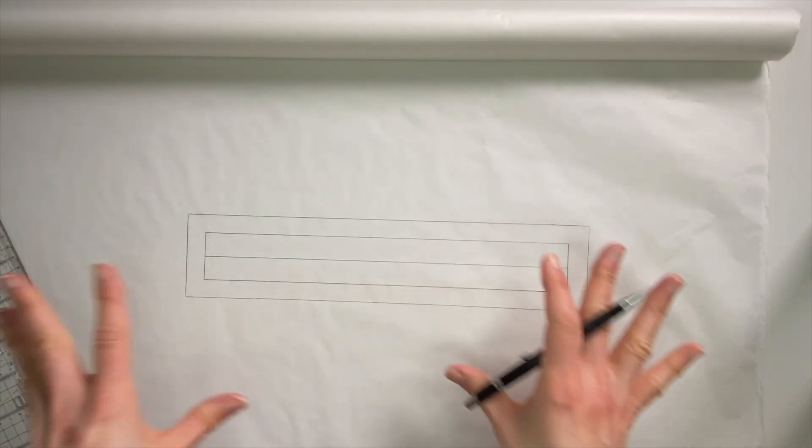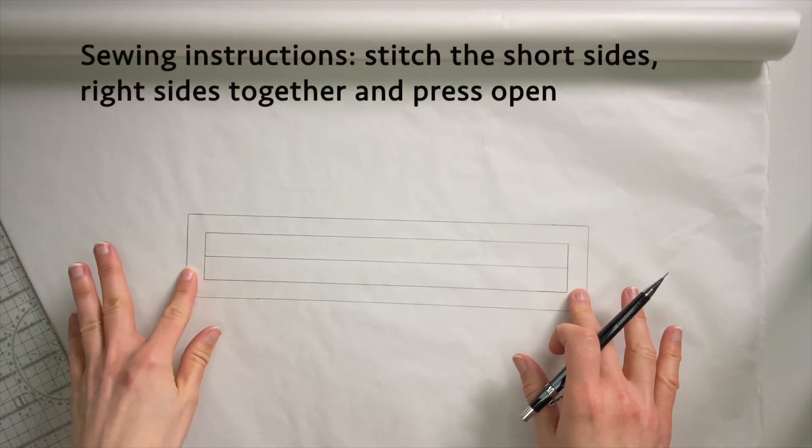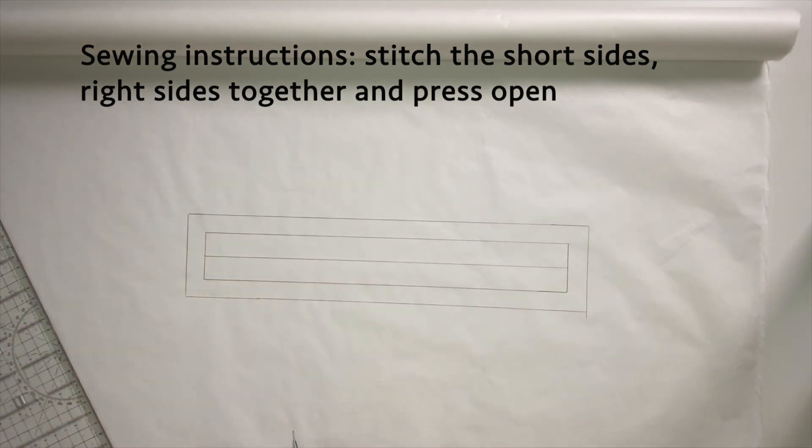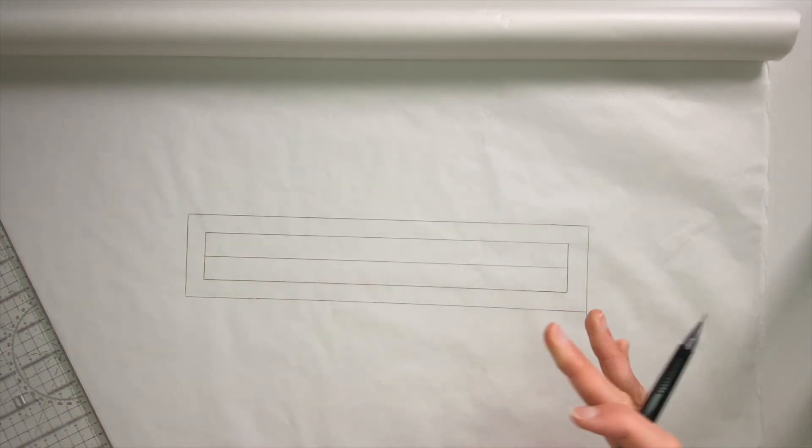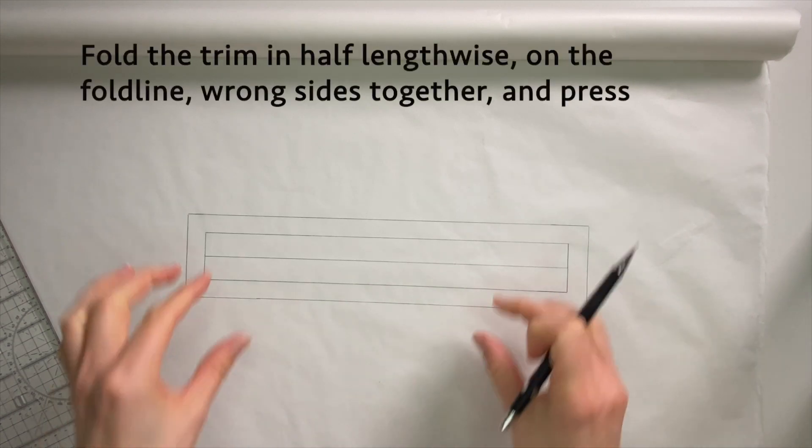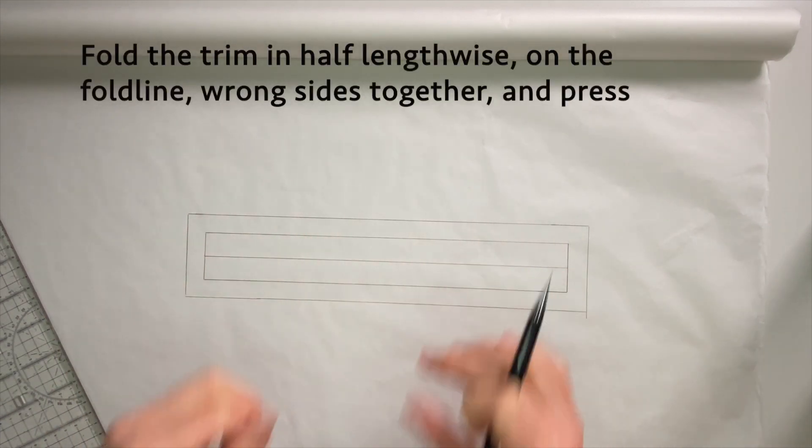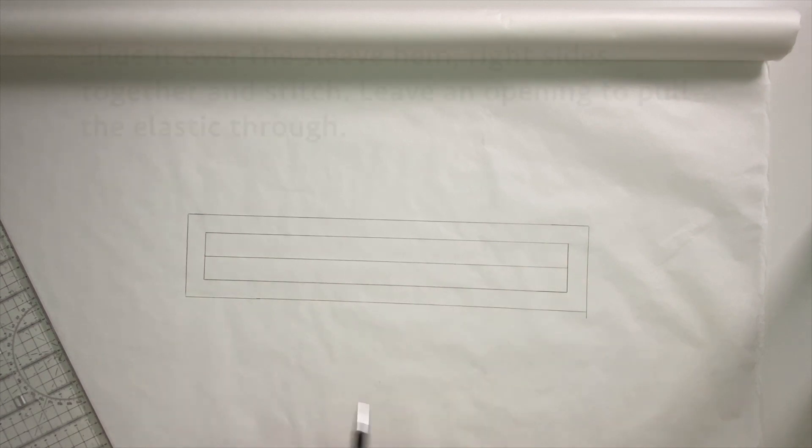Went a little too far here but that is basically what the sleeve trim will look like with the seam allowance added. So when you stitch it, first you stitch the short sides right sides together and then you press them open.